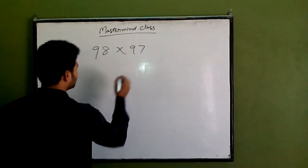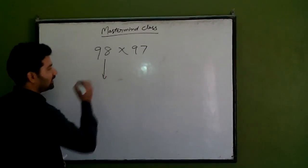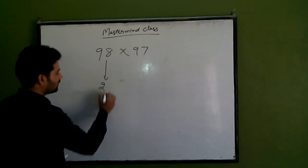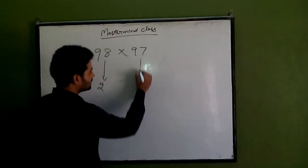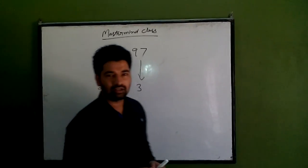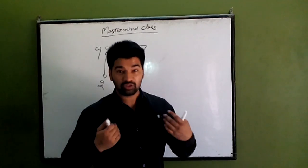98 x 97, we compare with 100. 98 is 2 less than 100 and 97 is 3 less than 100. Don't stay on me, speak with me.